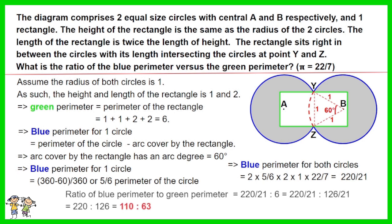The ratio of blue perimeter to green perimeter equals 220 over 21 to 6. Work out the equation. The answer is 110 to 63.